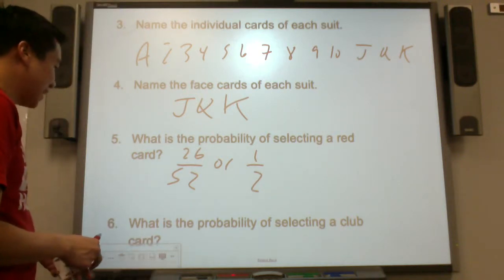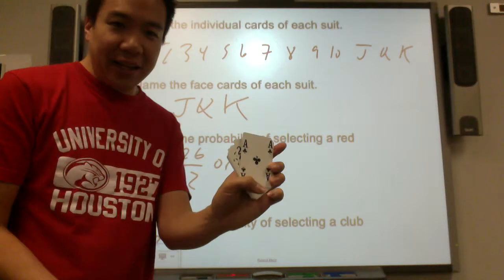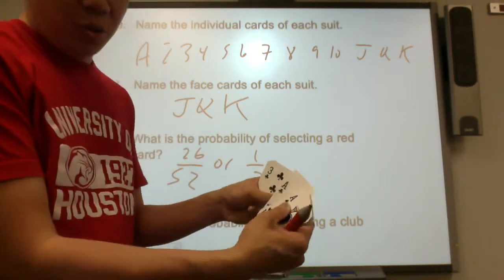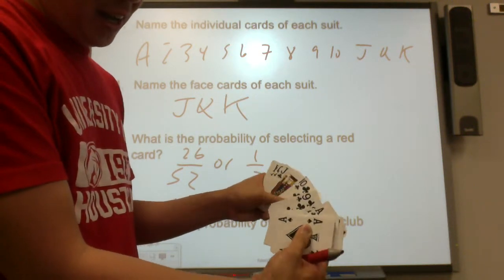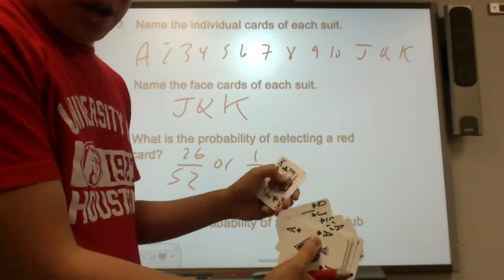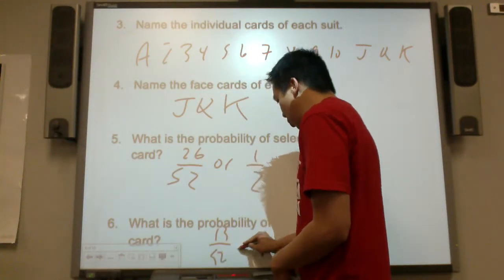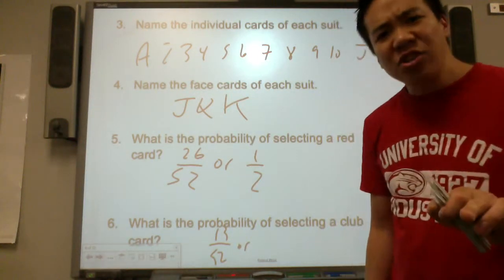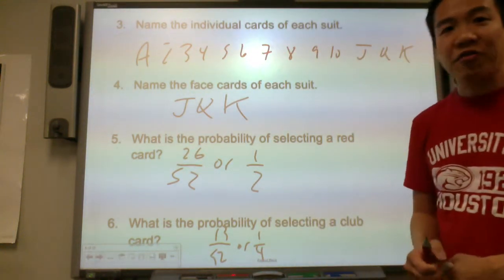What is the probability of selecting a club? How many clubs do you see? One, two, three, four, five, six, seven, eight, nine, ten, eleven, twelve, thirteen. There are 13 clubs out of 52. Stop. How many suits are there? Four. Isn't club one of the suits, one of the four? So it's one fourth.